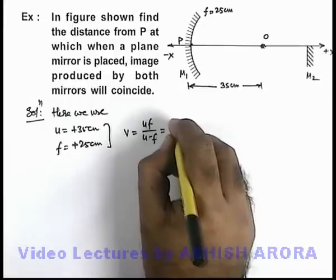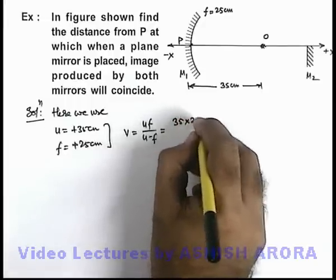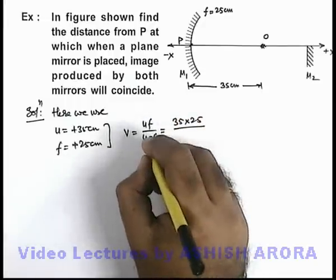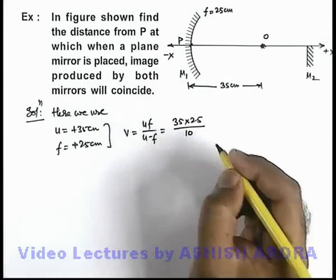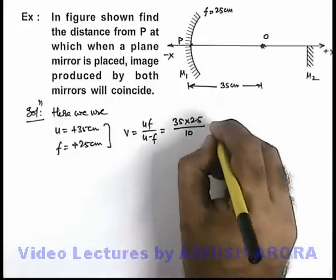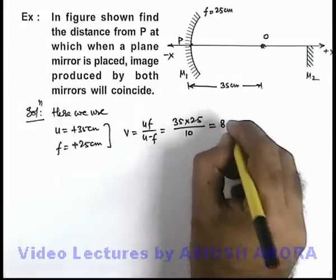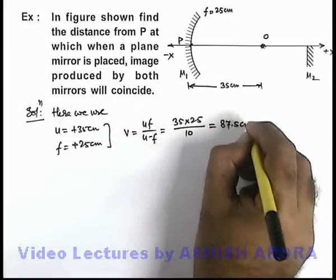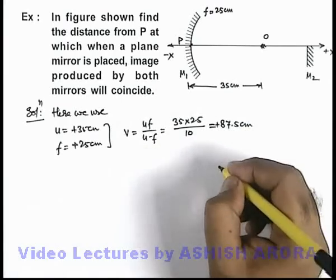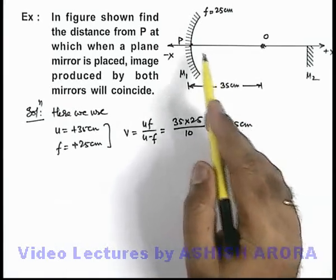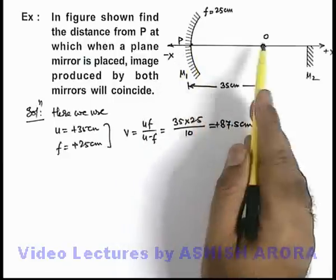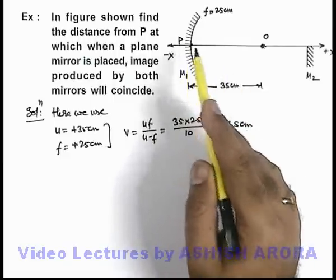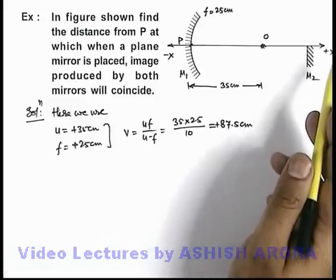Substituting the values I'll get 35 into 25 divided by 35 minus 25, which is 10. On further simplifying, I am getting this image distance is 87.5 centimeters and it is positive. That means the image produced by the concave mirror for this object will be at a distance 87.5 centimeters to the right of it.